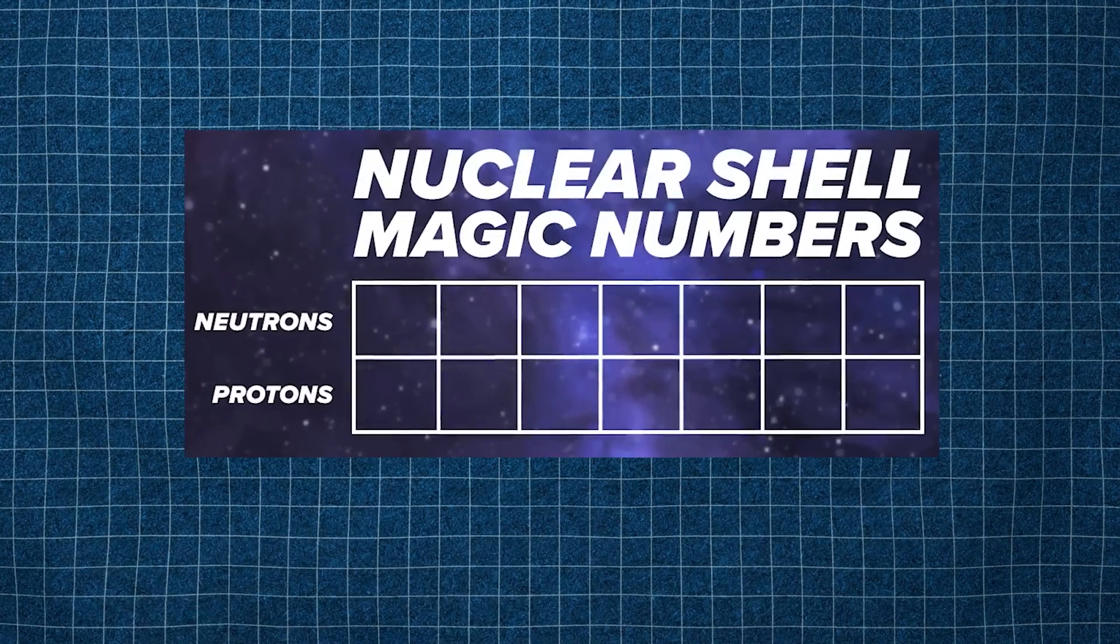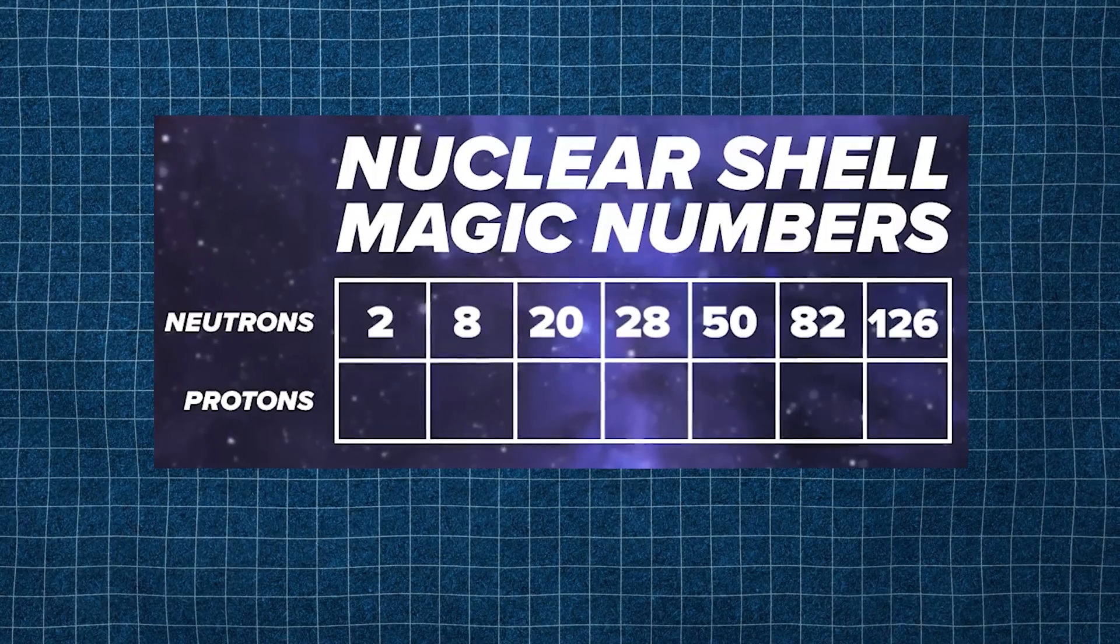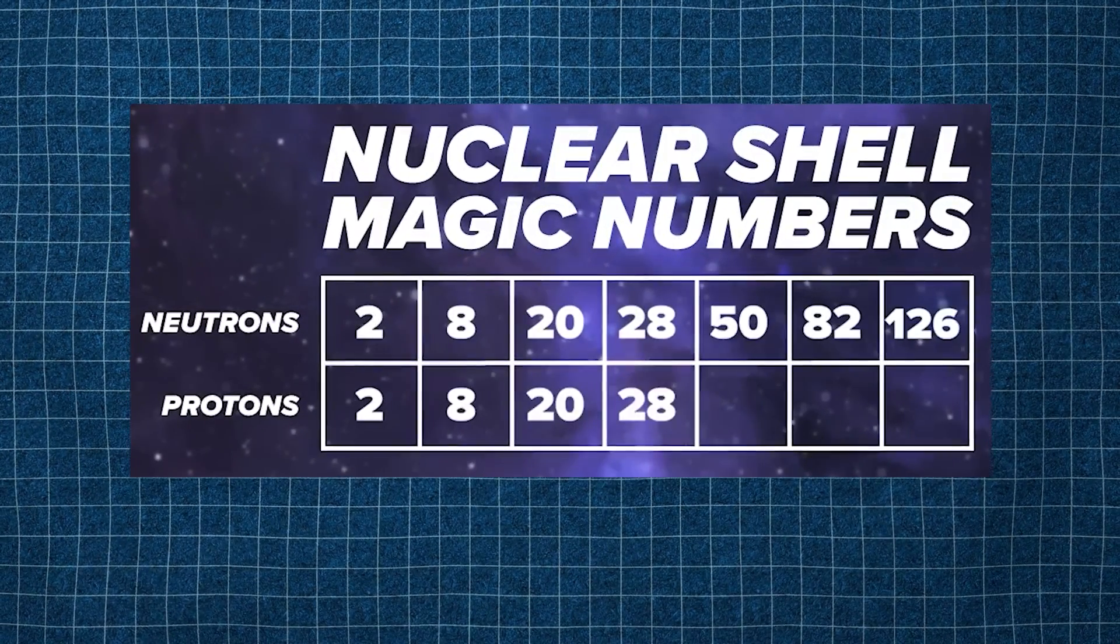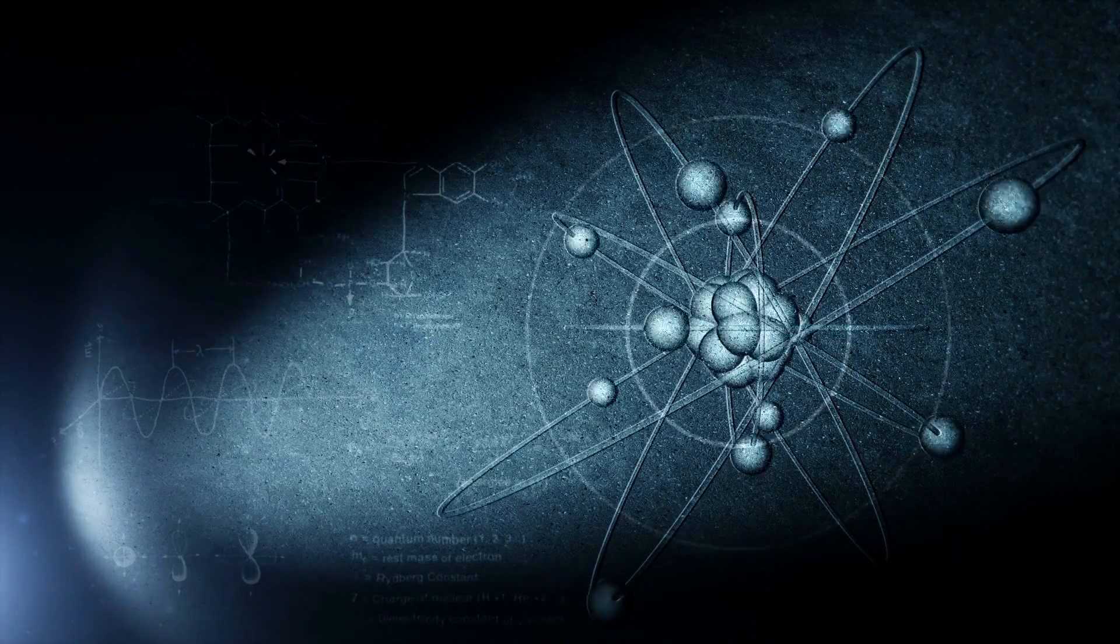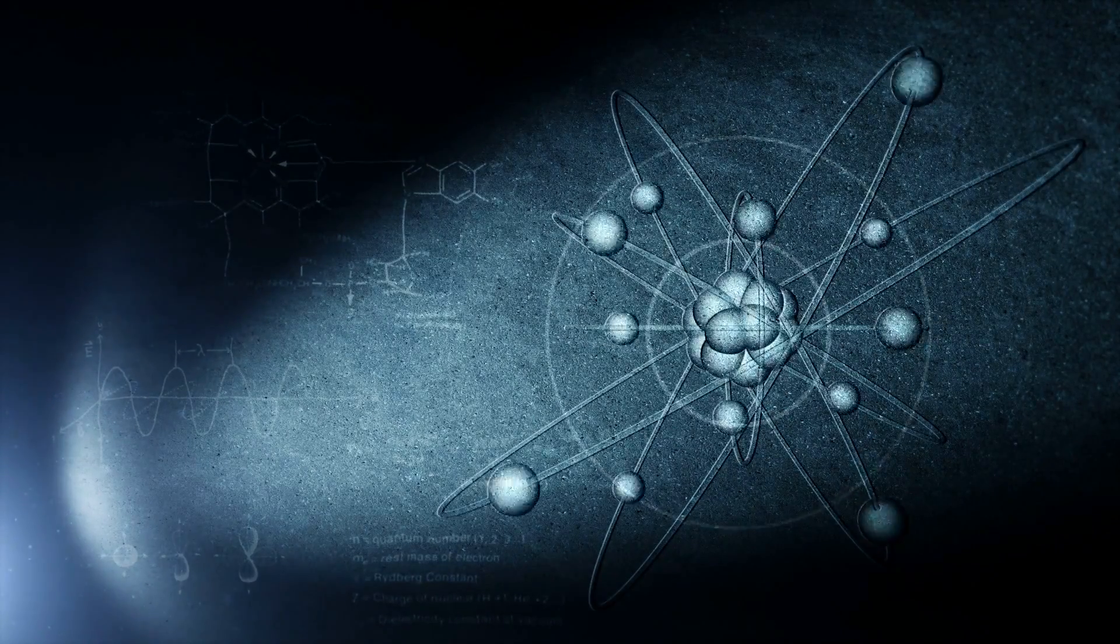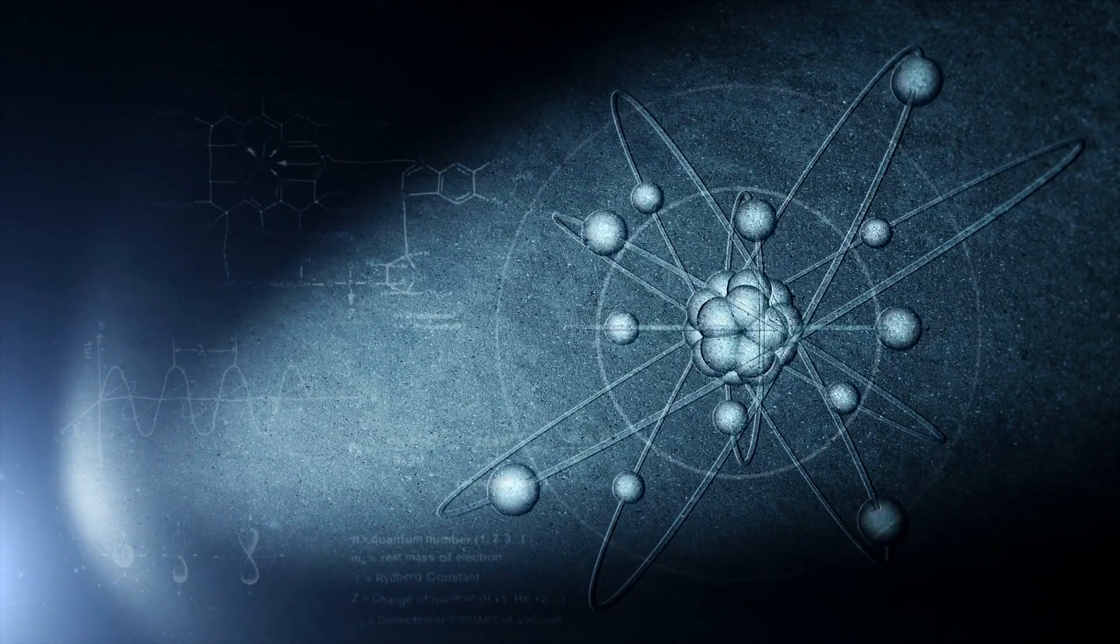These numbers are 2, 8, 20, 28, 50, 82, and 126 for neutrons, and 2, 8, 20, 28, 50, 82, and 114 for protons. The closer a nucleus is to these numbers, the more stable it tends to be.